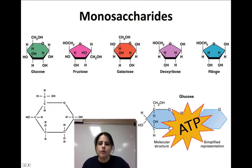The deoxyribose and the ribose, those are found in our genetic material because our DNA and RNA also contain sugar.